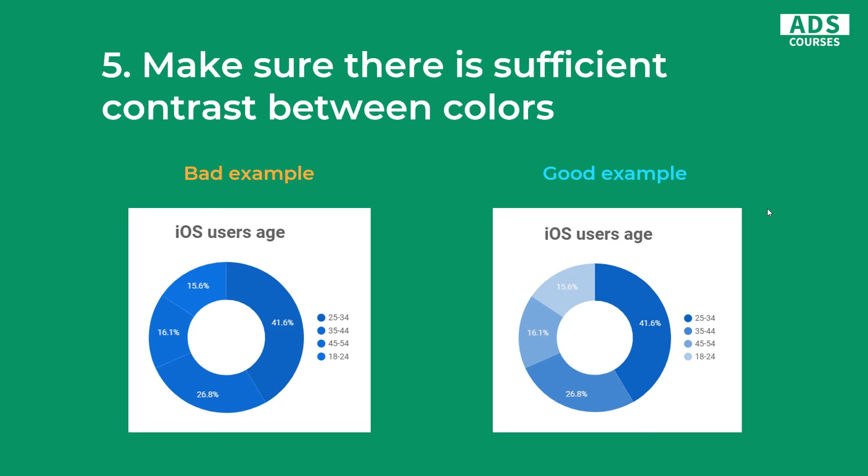The fifth one is also related to colors — you should make sure that there's sufficient contrast between colors. It may seem obvious, but a lot of people actually make mistakes like that. You can tell a story with your color: in the good example, the color tells us the same thing as the chart itself or the numbers. But on the left, it's almost the same color, we don't see the contrast. So the color itself can tell a story.